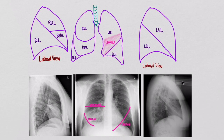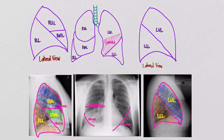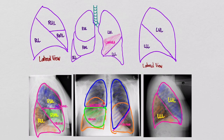Looking at the lateral X-ray, the oblique fissure goes something like this and the horizontal like that, splitting us into the three different lobes on the right. Similarly, the oblique fissure splits us into the left upper and left lower lobes. I've color-coded the different lobes here. On the PA it's a little more difficult because of overlapping — the upper lobes are here, the lower lobes sneak behind them and are a little posterior, and the middle lobe on the right sits in front.